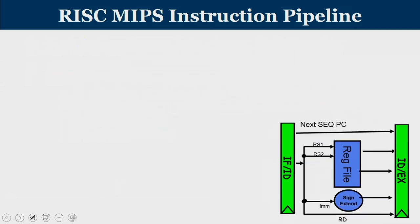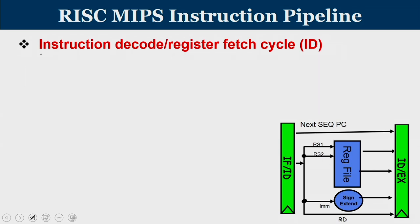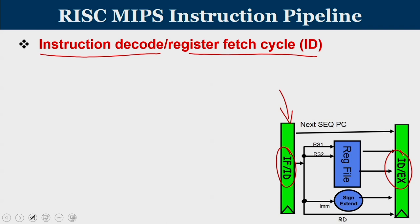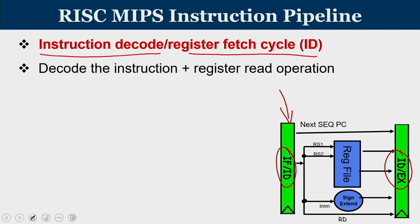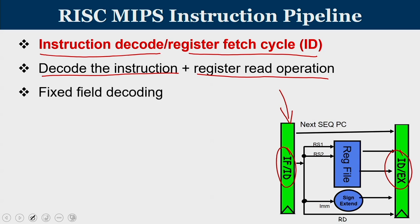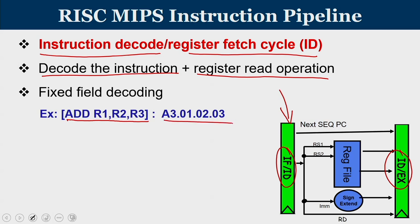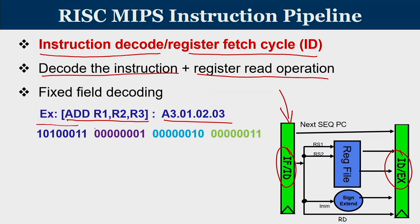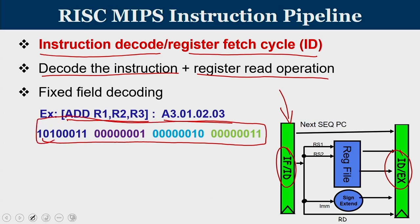The second stage is instruction decode and register fetch (ID). The instruction available in the IF/ID register is decoded to identify the opcode and operands. This is known as fixed field decoding. For example, for ADD R1, R2, R3, the 32-bit instruction is split: the first portion is the opcode and the remaining portions identify R1, R2, and R3. The decoding can occur in parallel since field positions are predefined.